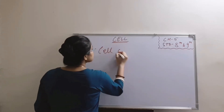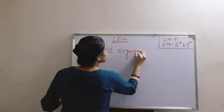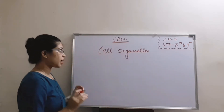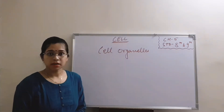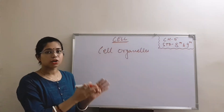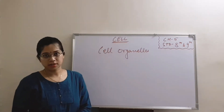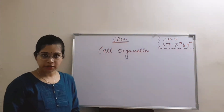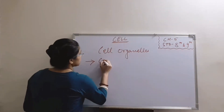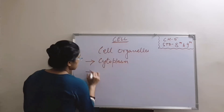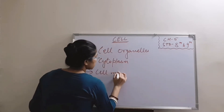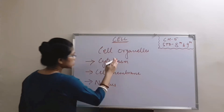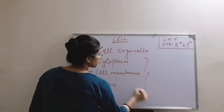We know that the cells contain cell organelles in them. Cell organelles are many in number, but all the cell organelles are not present in all types of cells. However, there are a few components which are common in each and every type of cell: cytoplasm, cell membrane, and nucleus. These are common in all types of cells.